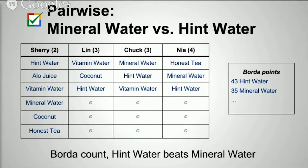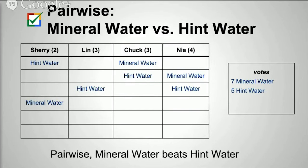Another problem: let's look at who won Borda count. Hint Water had 43 points versus mineral water's 35 — a pretty good lead. But everyone agrees on two-item elections. If we just consider mineral water versus Hint Water and ignore everything else, we can make two-choice votes for everybody. Sherry and Lynn clearly vote Hint Water; Chuck and Nia both prefer mineral water. Adding it up, mineral water actually beats Hint Water 7 to 5 — another indication that Borda count has problems.